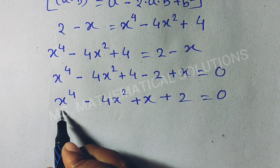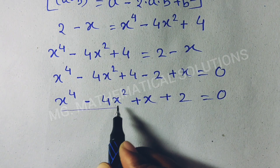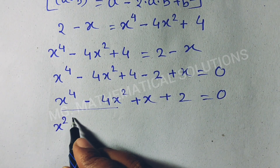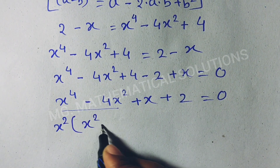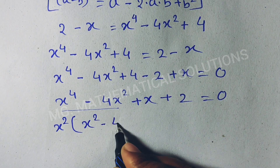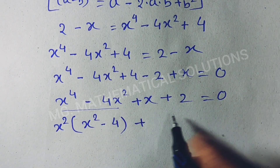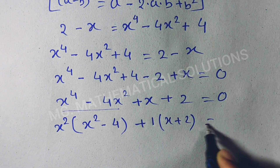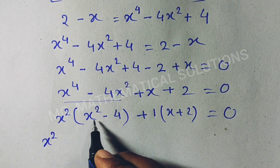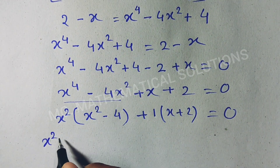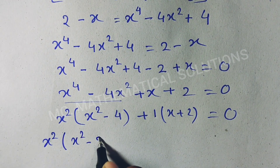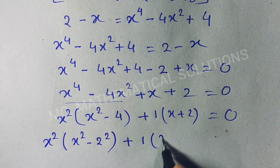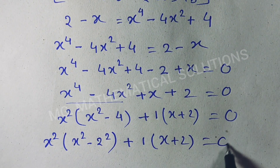Now we take x squared as a common factor. So we have x squared times (x squared minus 4), and here we take 1 as common, so plus (x plus 2) equal to 0. We rewrite: x squared times (x squared minus 2 squared) plus 1 times (x plus 2) equal to 0.